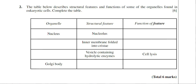We're looking at question 2 now from the January 2010 BY-1 paper. This question is worth 6 marks and it's another table question where you have to fill in the blanks. This is all to do with cell structure and organelles. It says the table below describes structural features and functions of some of the organelles found in eukaryotic cells — important to note that it's eukaryotic cells.